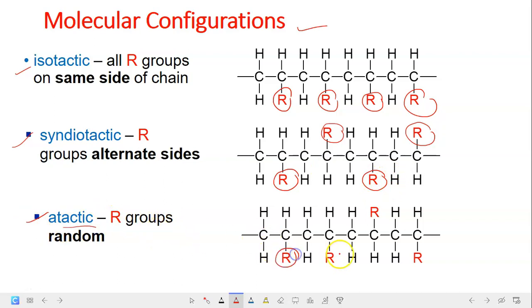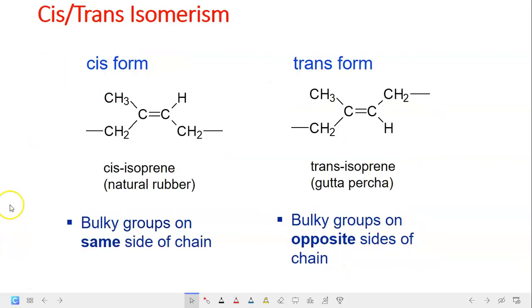And for atactic, in which the R groups, they are randomly located in the chain. It can be located a lot in the upper chain or in the lower chain. So it is random. Okay, so this is just isomerism of polymer. We have the cis form and we have the trans form. So you have learned organic chemistry before. So cis form is where all the bulky groups are located on the same side of the chain, while the trans when all the bulky groups are actually at the opposite sides of the chain.